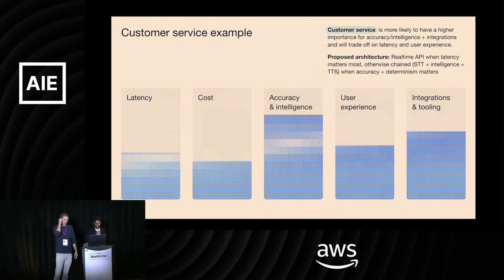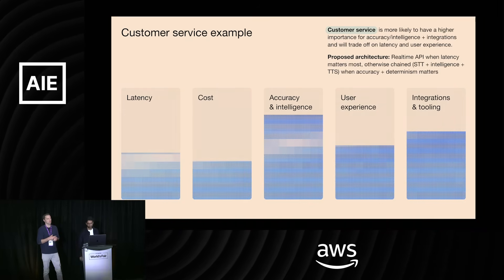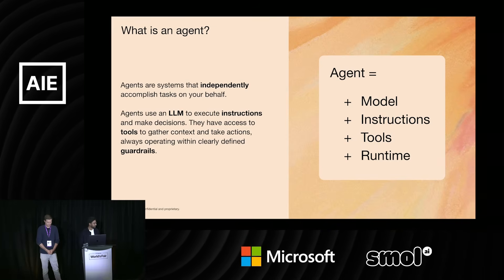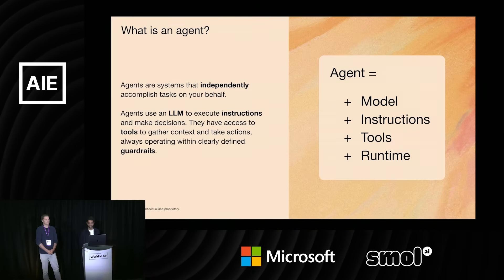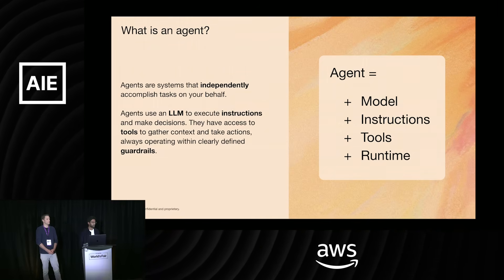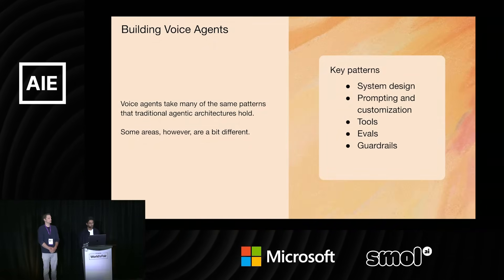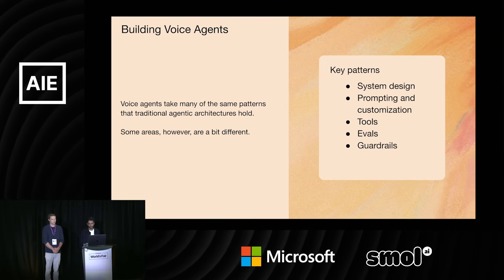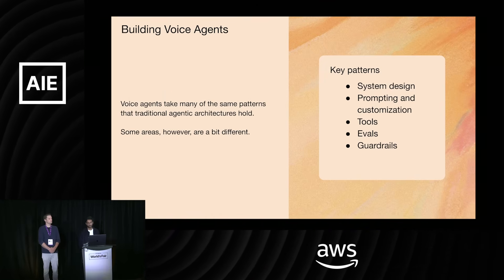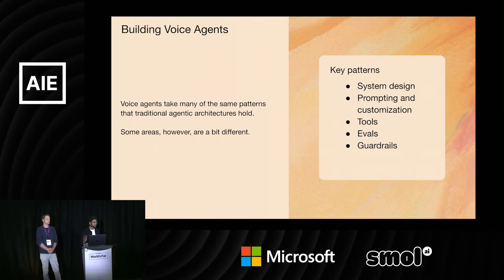I'll hand it off to Anoop to talk about very specific patterns we've seen when working with customers. Taking a step back: we've probably defined 'agent' many times, but here's a canonical definition to keep everyone grounded. Think of an agent as some model, some set of instructions (your prompts), the tools you give your model, and then the runtime — the guardrails and how you do your execution environment. When you're building voice agents, that's all the same things you should worry about, but there are also a few things that are a bit different that we'll focus on today. System design is probably a bit different than a traditional LLM agent, as is prompting and voice customization, the tools you're using, and evals and guardrails.